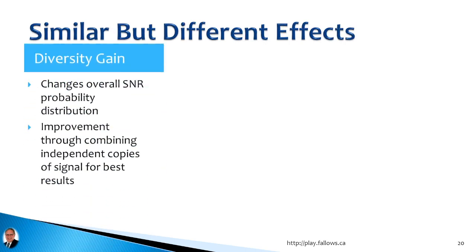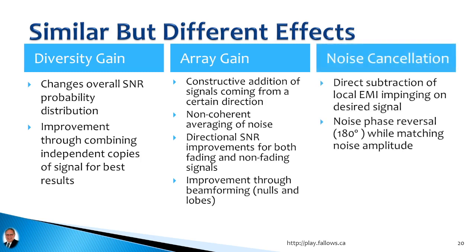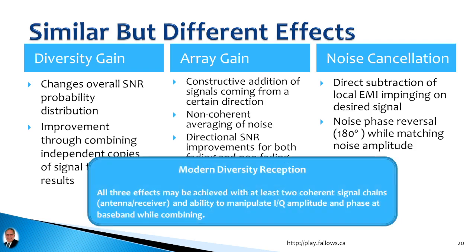These three effects are similar but different. Diversity gain changes the overall signal-to-noise ratio probability distribution — basically the odds of a better SNR are increased. Array gain is constructive addition of signals from a certain direction, giving beamforming with nulls and lobes. Noise cancellation is direct subtraction of local EMI impinging on the desired signal — you adjust amplitude, reverse the phase, and get noise cancellation. All three effects can be achieved with at least two coherent signal chains and the ability to manipulate amplitude and phase of IQ data at baseband.